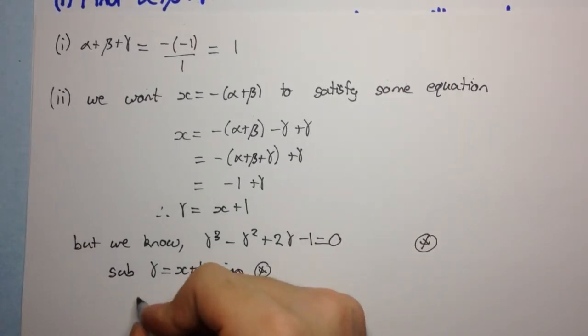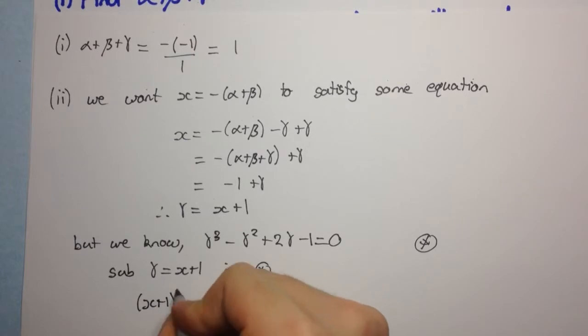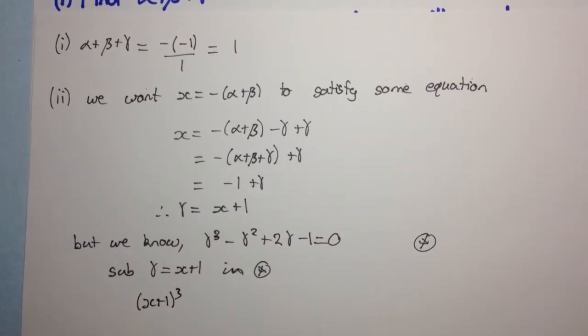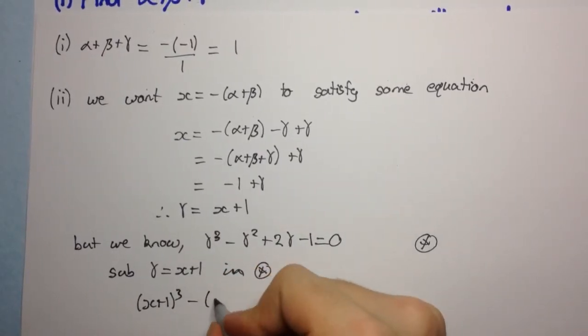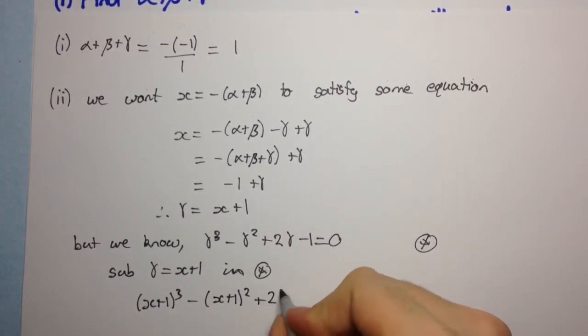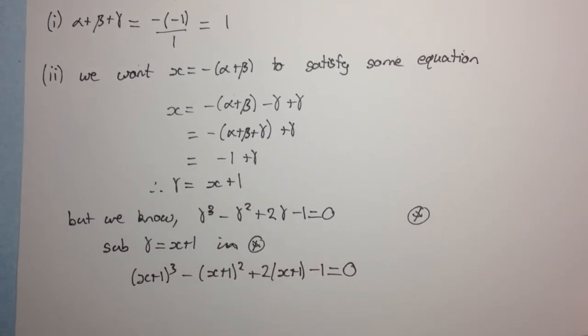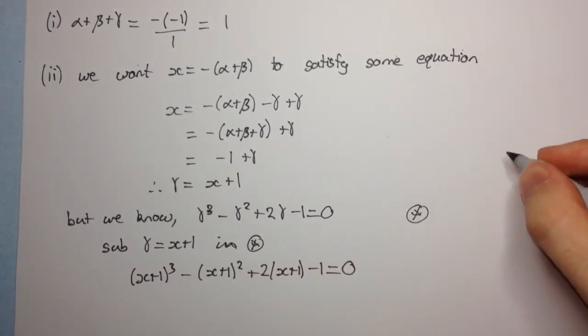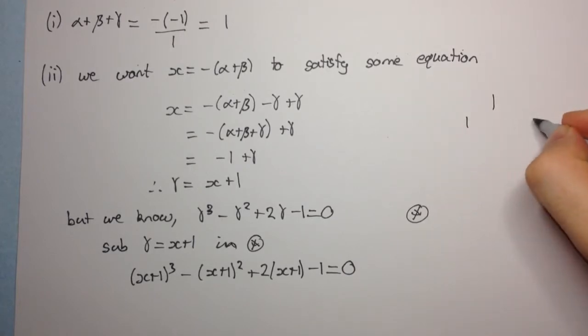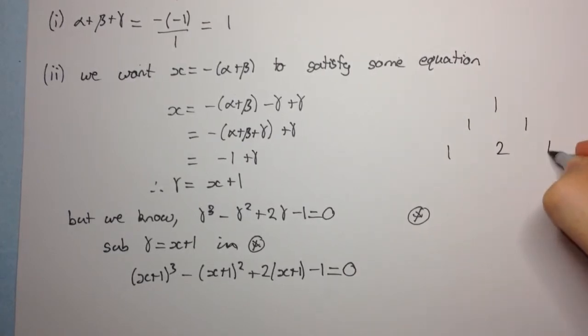Okay, so now we have x plus 1 cubed minus x plus 1 squared plus 2 into x plus 1 minus 1 equals 0. Okay, now we can expand this using binomial theorem, which you should know from your three-unit maths. If you forget it, you can always just redraw the Pascal's triangle.